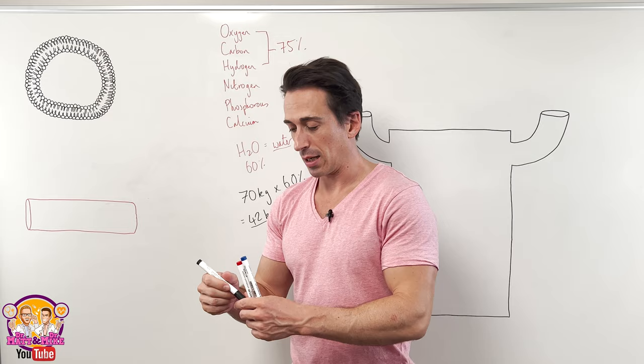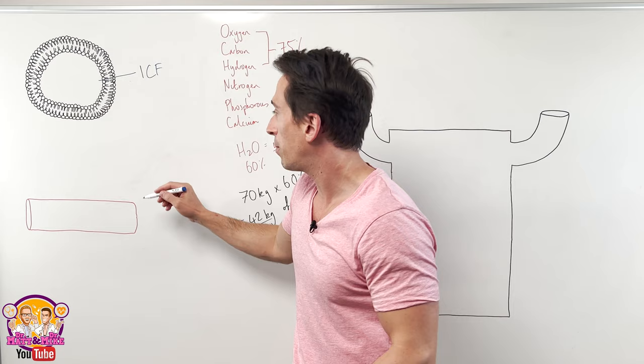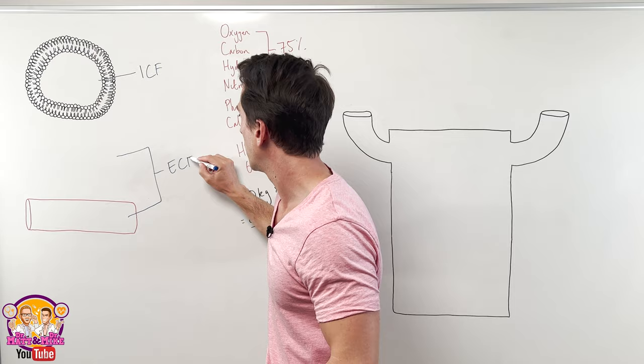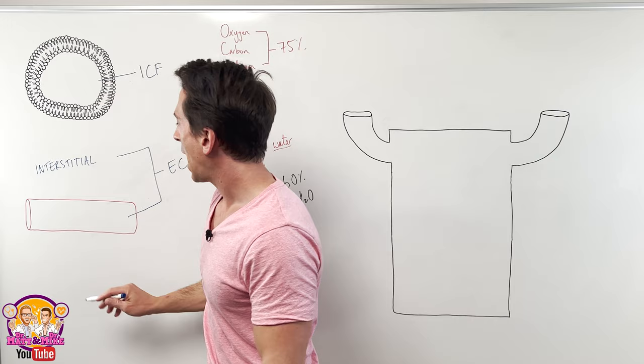It's the area inside the cells, which we call the intracellular fluid. Or it's the area outside the cells, which has two sub-compartments. The area outside the cell is called the extracellular fluid. And it's made up of the area outside the cells, but between the cells called the interstitial fluid, and the area inside of our blood vessels, which we call plasma.